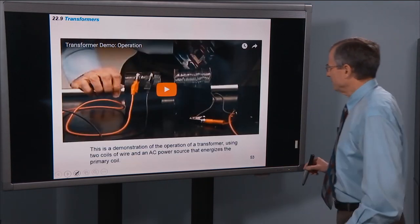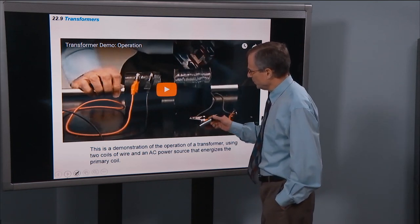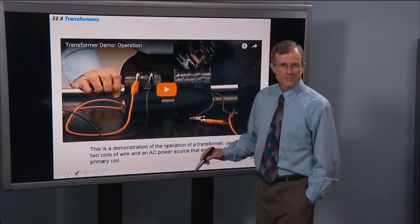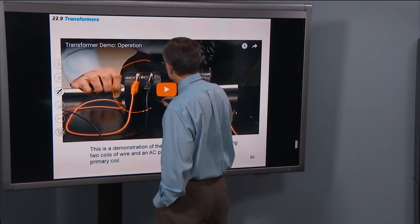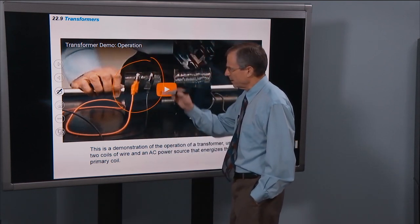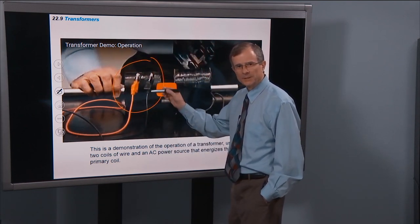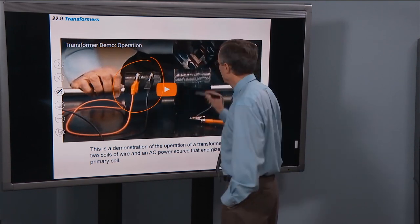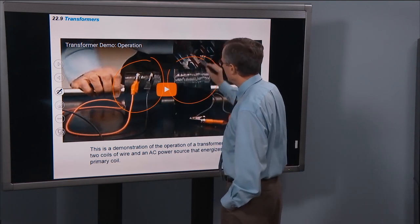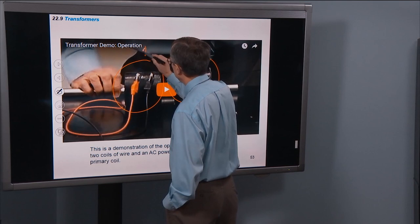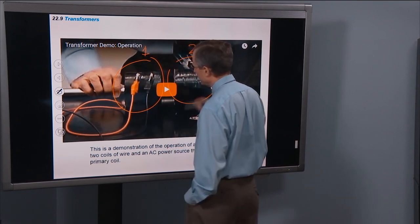This is a demonstration we're going to show of the operation of a transformer. It has two coils. This is one coil. It's just a coil of wire wrapped around like this with a hollow center. And then this is a secondary coil. It's called the primary coil. And this is called the secondary coil.